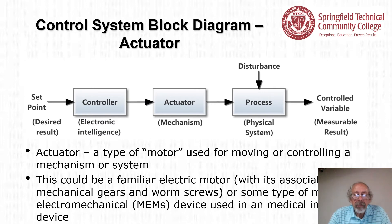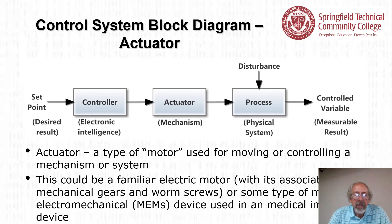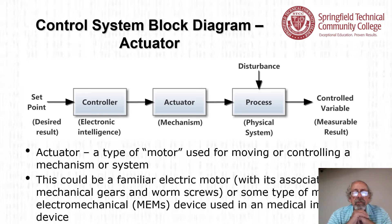The actuator — the middle block — is a type of motor, and motor is a generic term used for moving or controlling a mechanism or system. This could be a familiar electric motor with associated mechanical gears and worm screws, or some type of microelectromechanical — MEMS — device, such as one used in a medical implant. The actuator has become much more broadly based as far as what it's capable of doing.